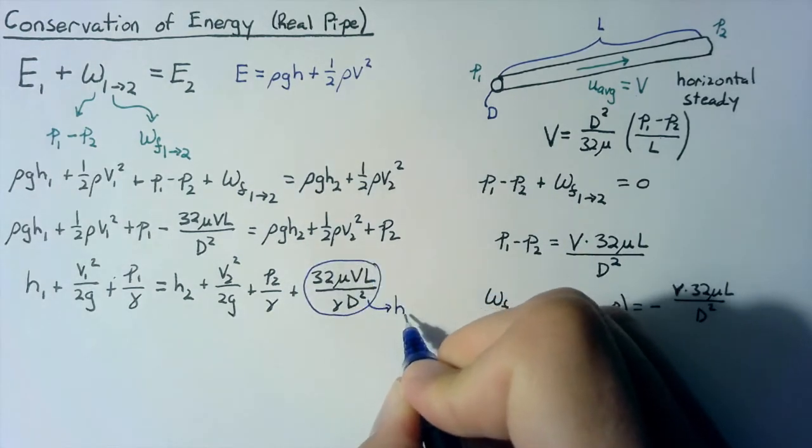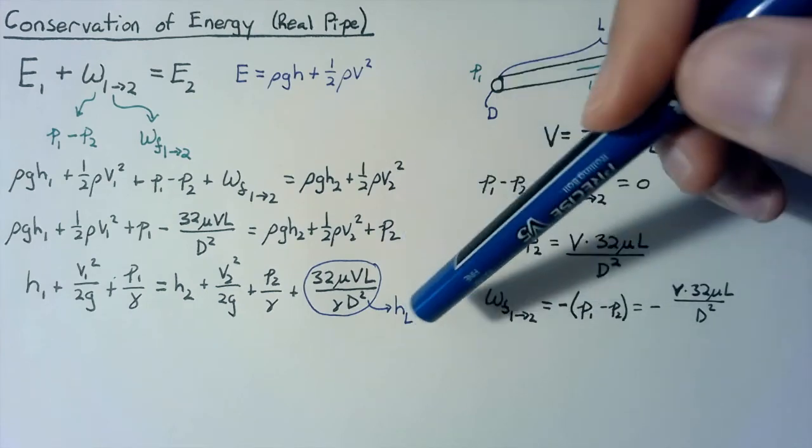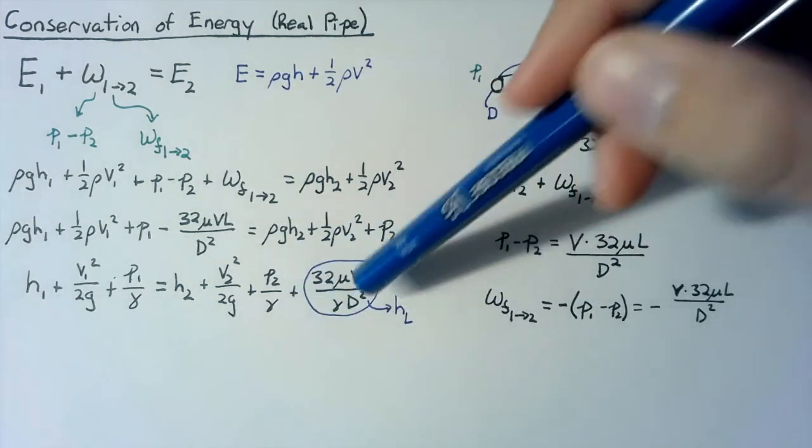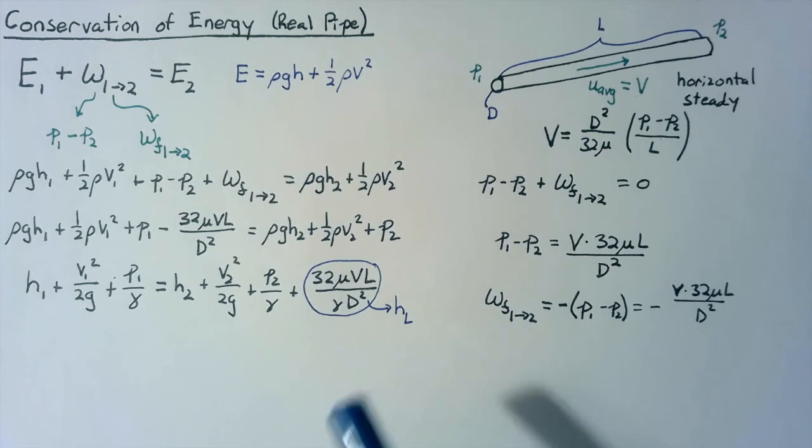And this term right here has another name. We also call it the head loss. So for a laminar flow, the head loss is written exactly as we have here. Now, this is not a very convenient way to write this. Hidden in here, we also have a Reynolds number, which we can take out and make it a little bit cleaner. But we also want to link this to something called the Darcy friction factor, which is what's used a lot for turbulent flow.